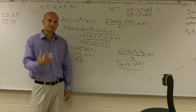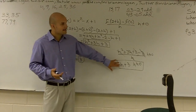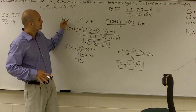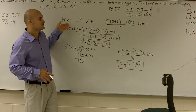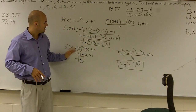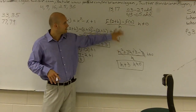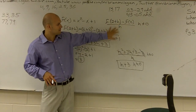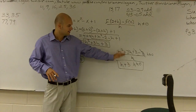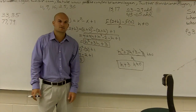Once we get later in the year and in calculus, you guys will understand exactly what that means. But all you really have to do for the problem is evaluate each one of these for your functions, put it back into that setup, and simplify it as best as possible. Your final answer is h plus 3, when h cannot equal 0.